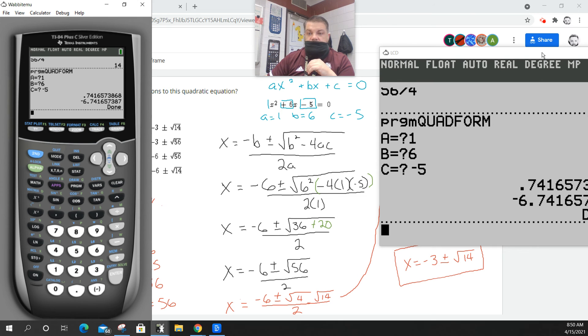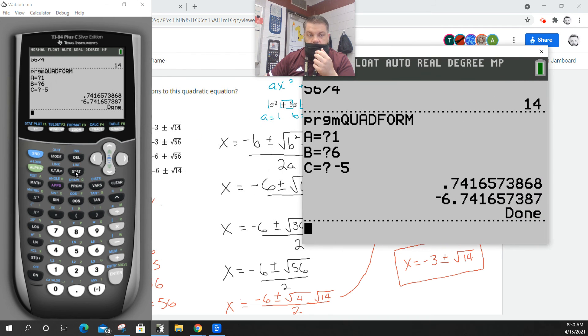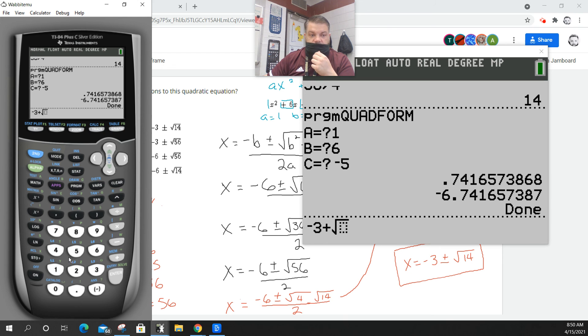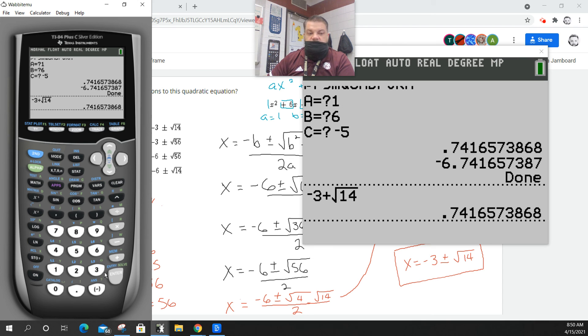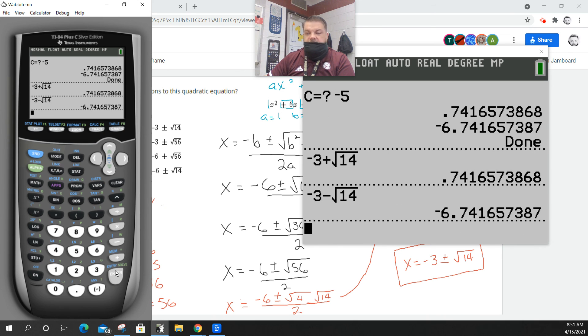And then C is negative five. You have to use the negative sign. Then if I hit enter, I get these two numbers. Now, it's going to convert that to a decimal, but watch this. If I go negative three plus the square root of 14, well, bam, with the bacon sizzle, that's one solution. If I say negative three minus the square root of 14, I get that answer.